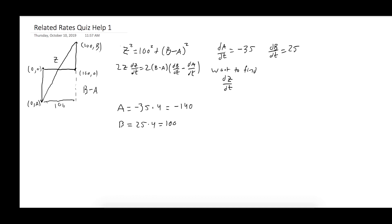Okay, and now Z, well Z² is equal to 100² plus (B minus A)². We can take the square root of both sides and get Z is equal to the square root of...